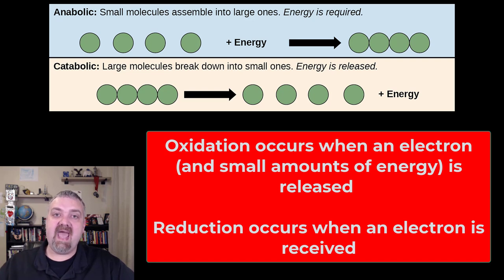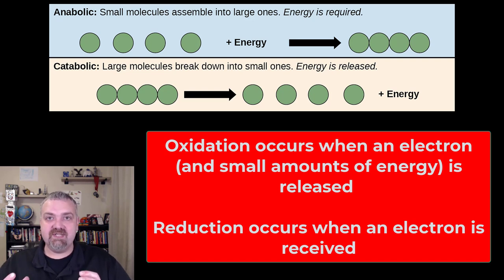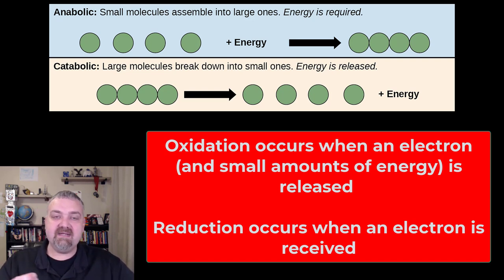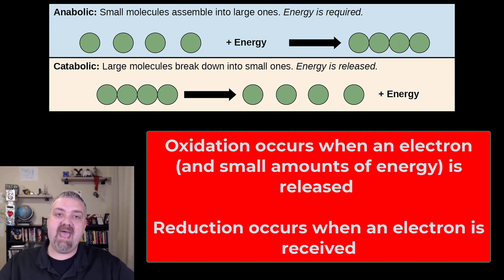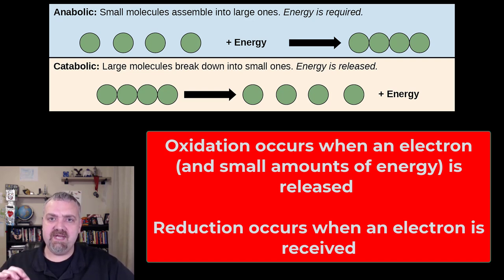Reduction is when that electron is added somewhere else. How I remember it — it's kind of silly — but when you reduce something, you make it bigger, and I remember it because it doesn't make sense. So oxidation peels an electron off of something — think about metal rusting or an apple oxidizing and breaking down. Reduction is where that electron ends up; it gets added somewhere else. We also use oxidation to kill microbes in microbiology and all manner of other things.